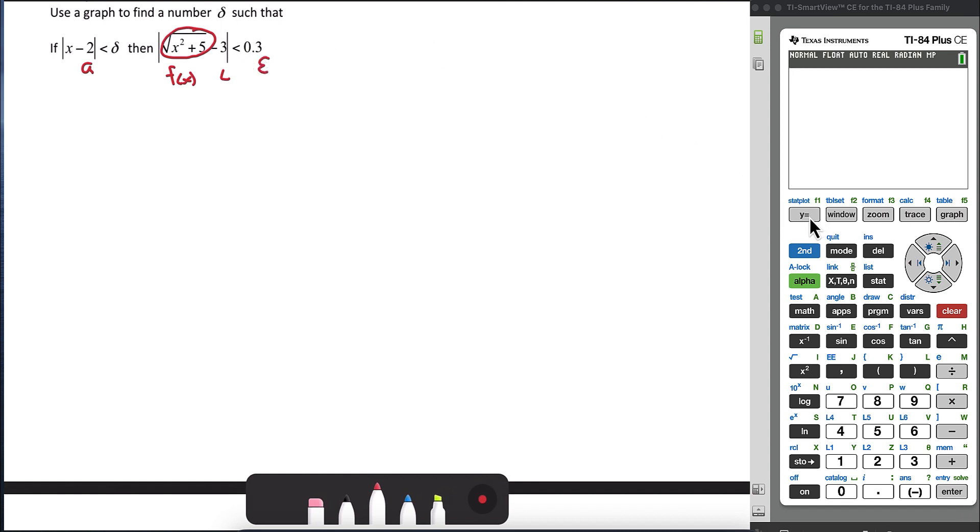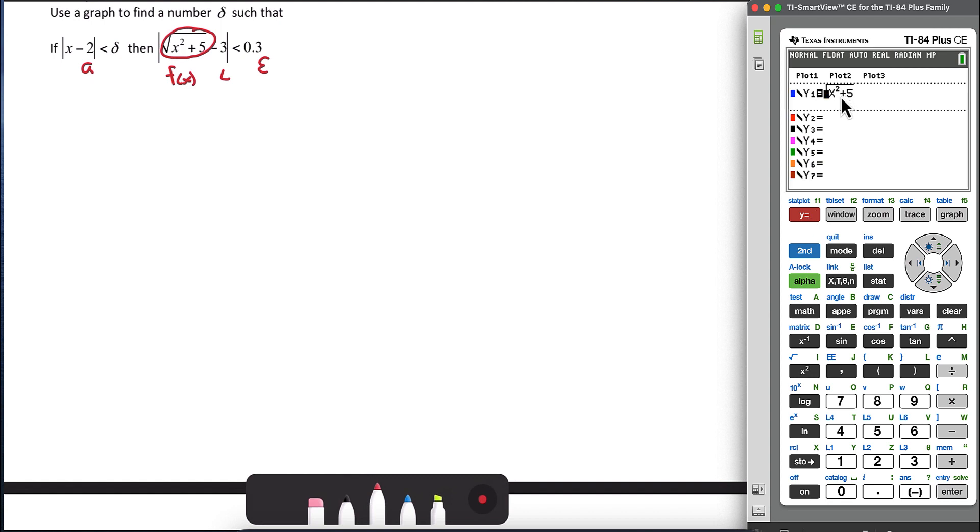So let's go to the calculator and graph this. In y equals, we'll type in our equation and graph. Now we can do it from here, just the normal settings, but it might be beneficial to zoom in a little bit to get a better picture of what's happening. So let's go to the window and set our x min to just 0 so we can see the y-axis. And the x max, we want to make sure that 2, our x value that we're focusing on, is within that window. So let's maybe make it 4 so that 2 is in the middle.